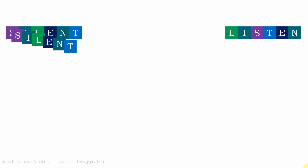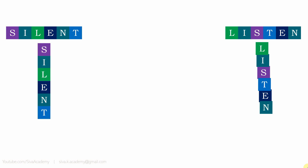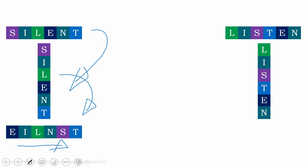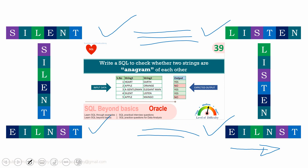Let me quickly show you what logic was implemented in video 39, and then we'll revisit the comment. Suppose you have two strings — 'silent' and 'listen' — and you want to check whether they are anagram of each other. In video number 39, what I implemented was: first, convert the string into a row of characters — for example, 'silent' into a row of characters, and similarly 'listen' into a row of characters. Then I converted the rows back into a string, but while converting back I ordered them in alphabetical order. So 'silent' is converted to a row and then sorted alphabetically; similarly 'listen' is sorted alphabetically. If these two resulting strings are equal, then 'silent' and 'listen' are said to be anagram of each other. This is the logic I implemented in that video.